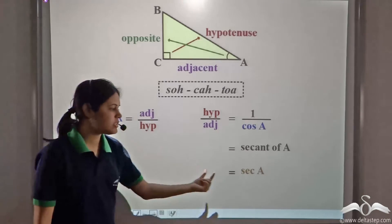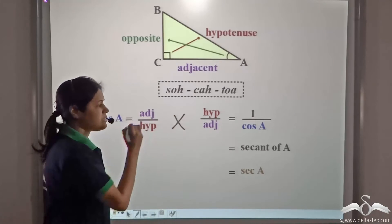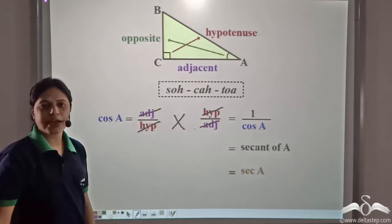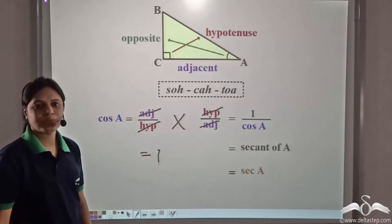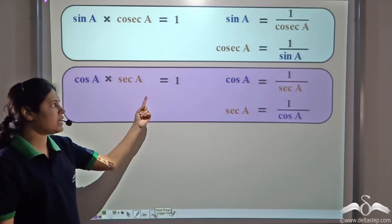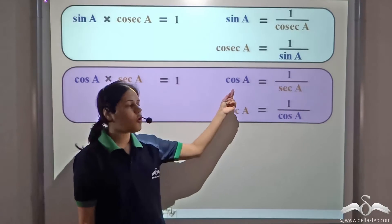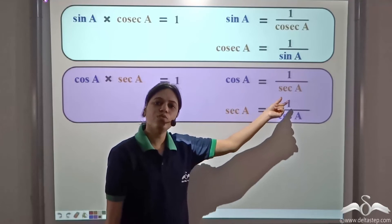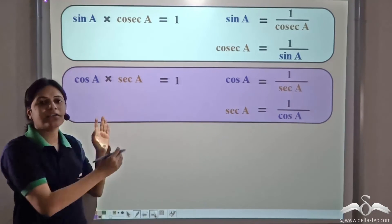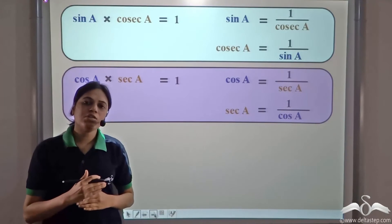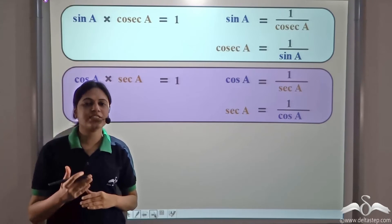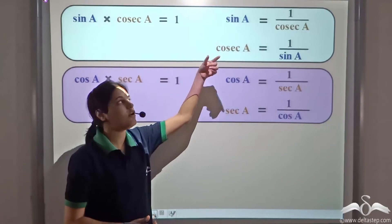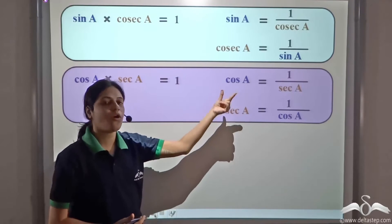Again, if I multiply cos A and sec A, the hypotenuse and hypotenuse get cancelled, and adjacent and adjacent get cancelled, so we get one. So, we can say cos A into sec A is equal to one — that is, cos A is equal to one by sec A and sec A is equal to one by cos A. So, these two ratios are the reciprocal of each other. Cos is the reciprocal of sec and sec is the reciprocal of cos. So, cosec is the reciprocal of sine and sec is the reciprocal of cos.